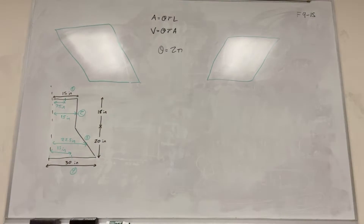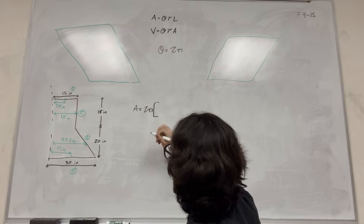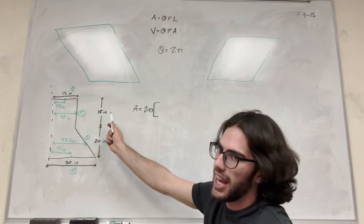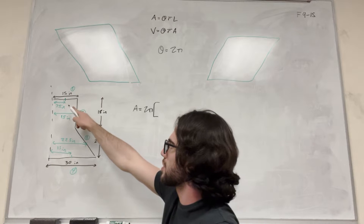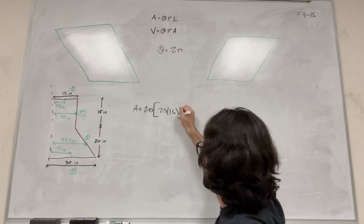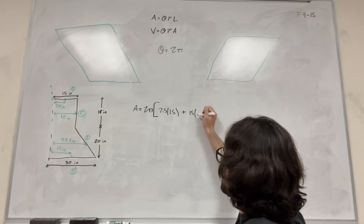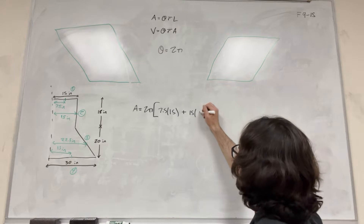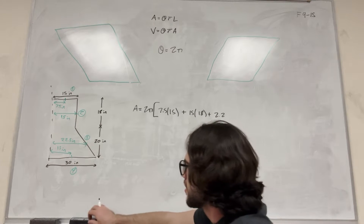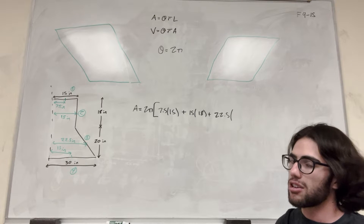Now let's use the surface area formula: area equals 2π times the sum of each r̄ multiplied by its length. Starting with line 1: r̄ is 7.5 and its length is 15 inches, so 7.5 × 15. For line 2: r̄ is 15 inches and its length is 18 inches, so 15 × 18. For line 3: r̄ is 22.5 and it's a diagonal, so we need the Pythagorean theorem to find its length.